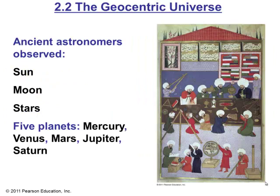So what did ancient astronomers observe? They observed the sun, the moon, some stars, and five planets: Mercury, Venus, Mars, Jupiter, and Saturn. This is a picture of Turkish astronomers at work. During the Dark Ages, much scientific information was preserved and new discoveries were made by astronomers in the Islamic world, as shown in this 16th-century manuscript.